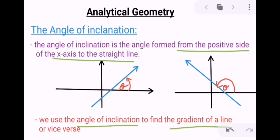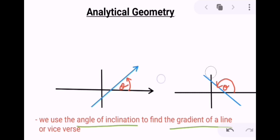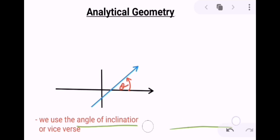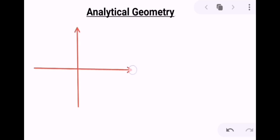I'm going to erase all of this off, and then we're going to have a look at two examples where we must calculate the gradient of a line given the angle of inclination.